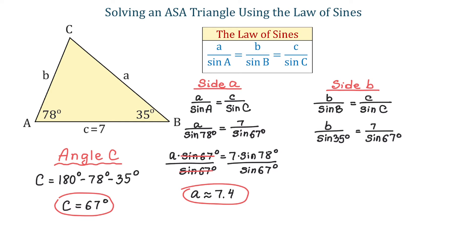Then, we will use cross multiplying to write that B times sine of 67 degrees equals 7 times sine of 35 degrees. And now, we will divide both sides by sine of 67 degrees to isolate B. And B will be approximately 4.4.